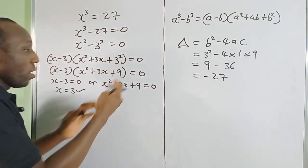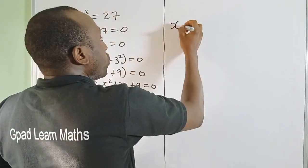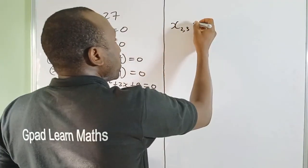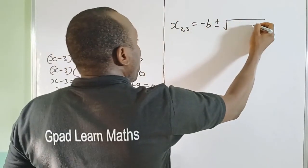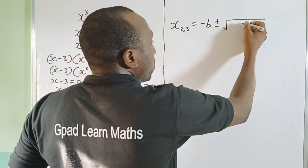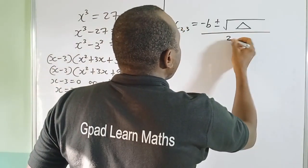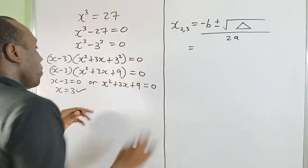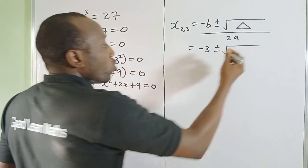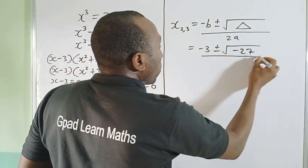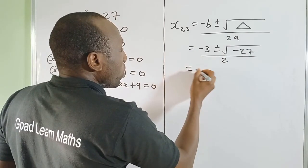We still need to find them, so let's use the quadratic formula. Roots x₂ and x₃ equal (−b ± √(b² − 4ac)) / 2a. Substituting: b = 3, so we get (−3 ± √(−27)) / (2 × 1), which is (−3 ± √(−27)) / 2.